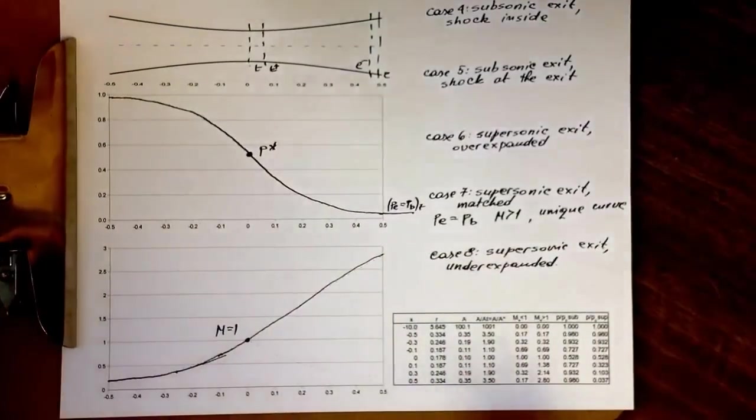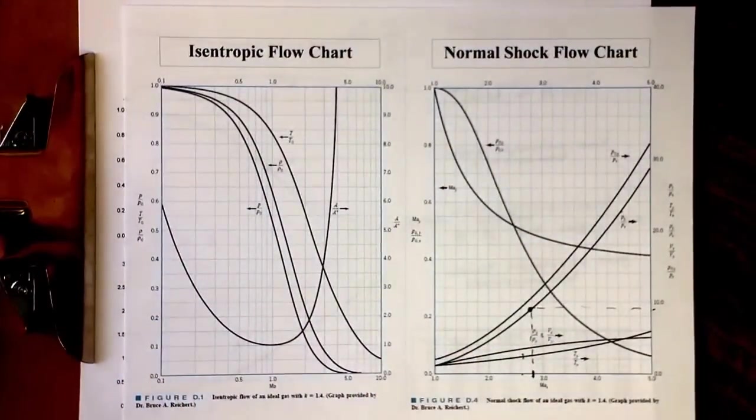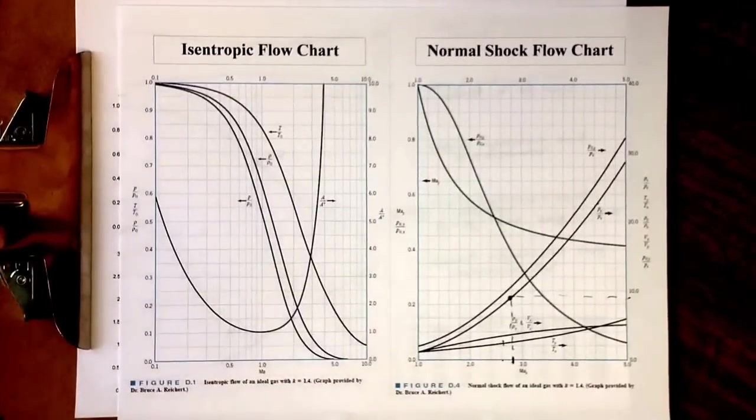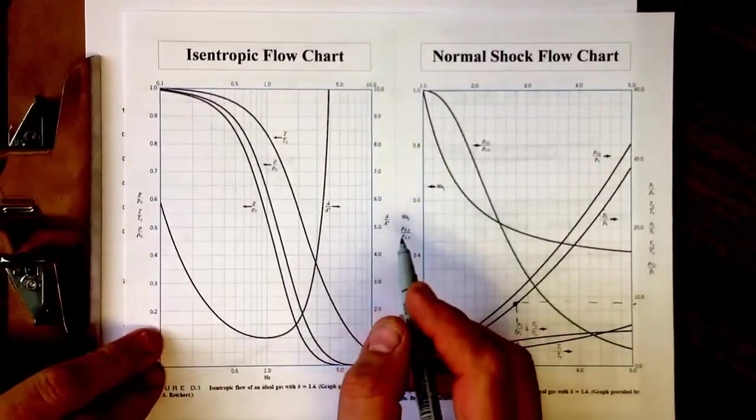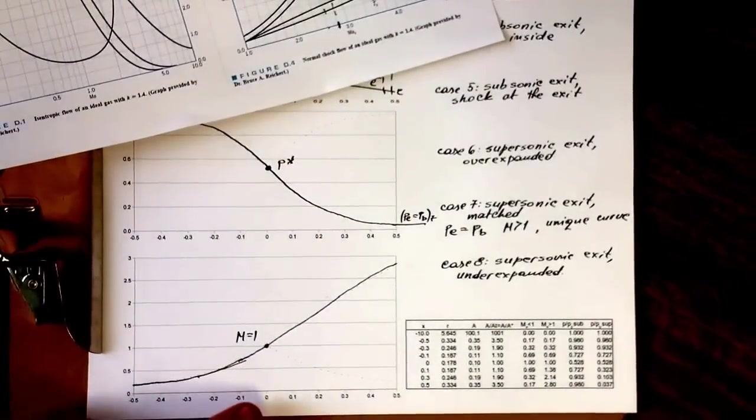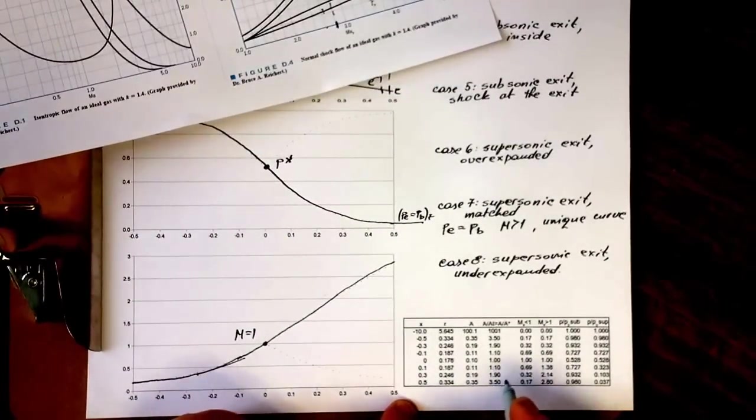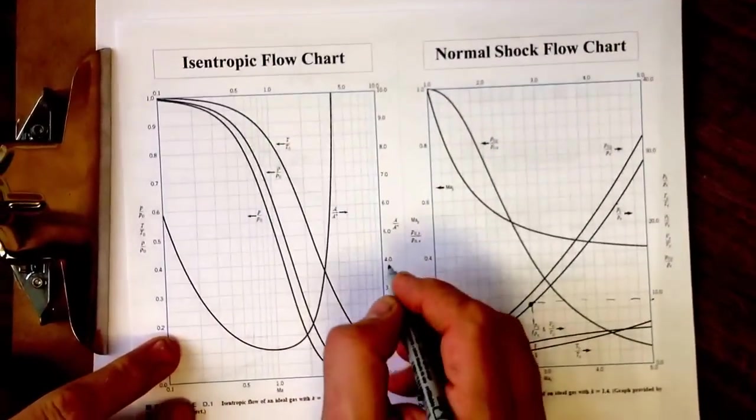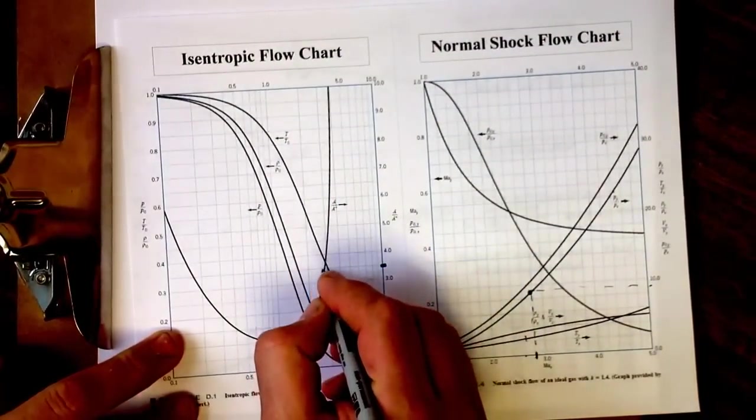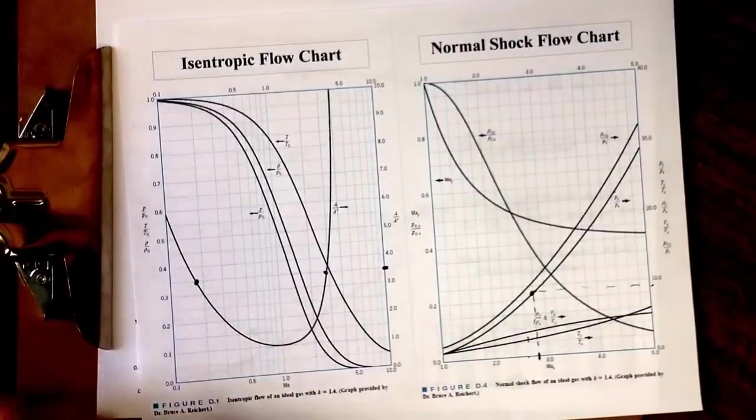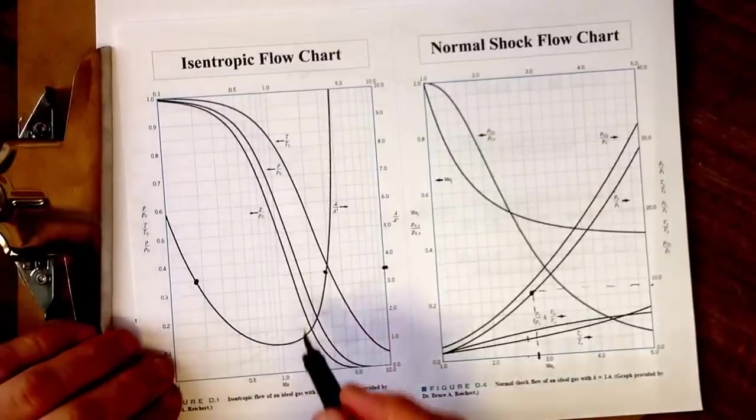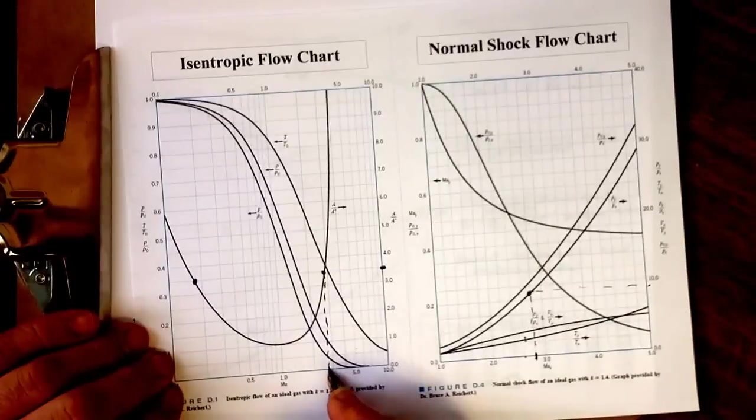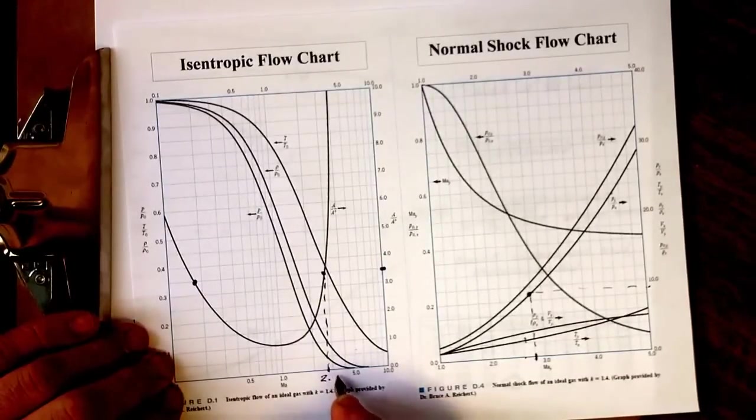We can use our isentropic flow chart and identify—we're looking at an aspect ratio of areas of 3.5. Here at the bottom is the little table that shows the exit ratio to throat ratio is 3.5. We're looking at that level which gives us two characteristic points on the area curve, corresponding to supersonic Mach number of 2.8 at this end.